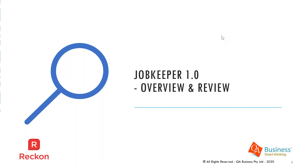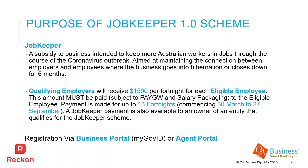Let's look at the overview of JobKeeper 1.0. The original JobKeeper was a subsidy introduced by the government to help keep workers connected to their employers during a period when the economy went into hibernation for up to six months. That original six-month period finishes on the 27th of September. Originally, qualifying employers would receive $1,500 for each eligible employee. We must pay this amount — it's subject to pay-as-you-go withholding, it can be salary sacrificed, and it was for up to 13 fortnights. A JobKeeper payment was also available to an owner of an entity or self-employed individual.